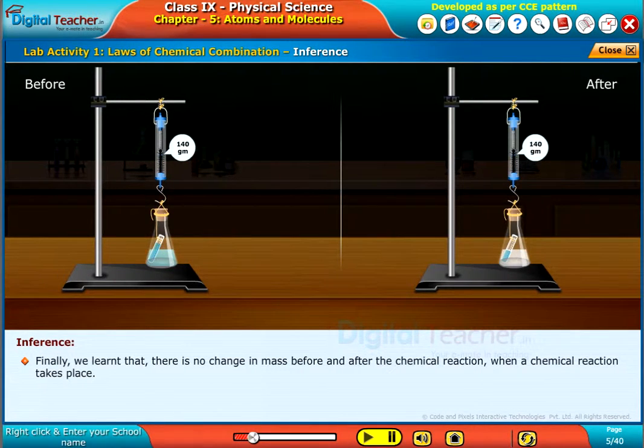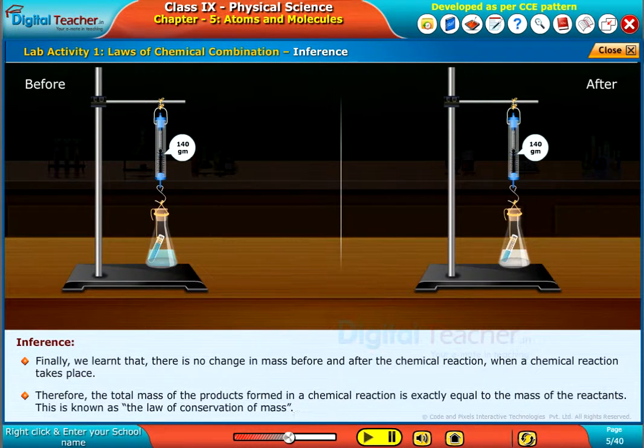Finally, we learned that there is no change in mass before and after the chemical reaction when a chemical reaction takes place. Therefore, the total mass of the products formed in a chemical reaction is exactly equal to the mass of the reactants. This is known as the law of conservation of mass.